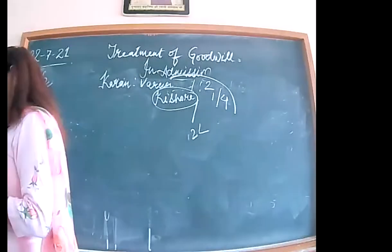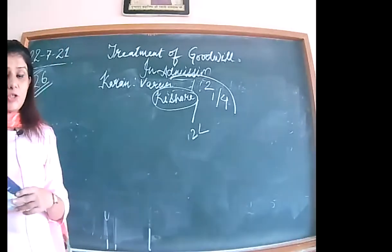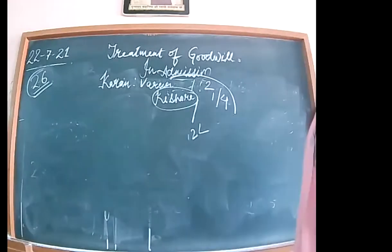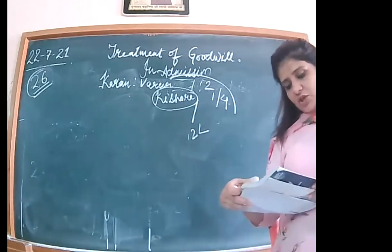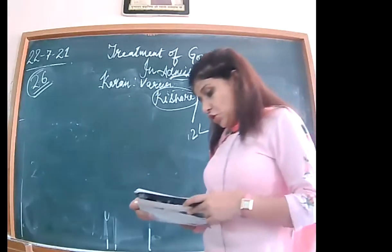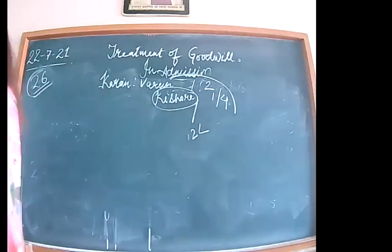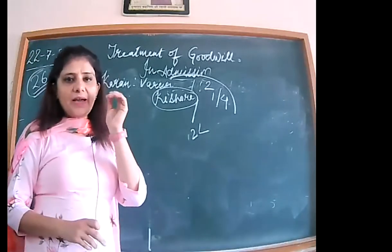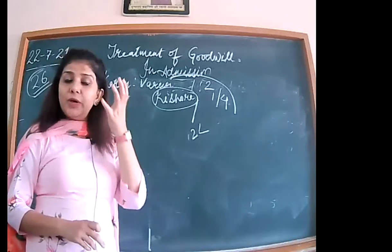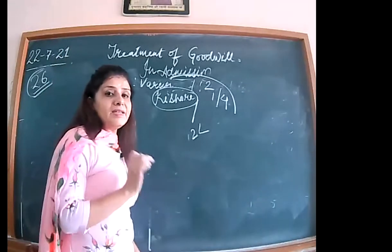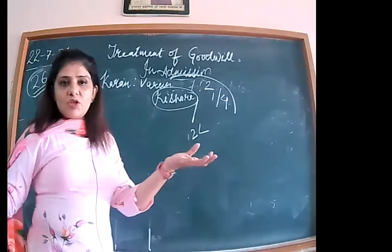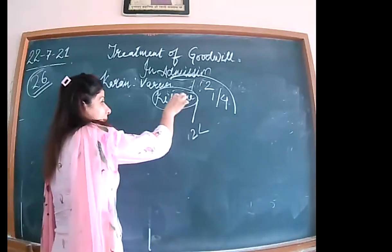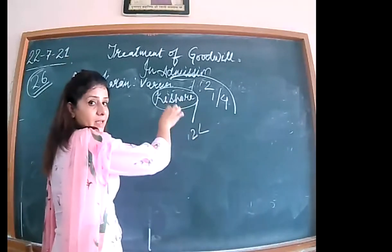The question asks: calculate the goodwill of the firm on Kishore's admission, calculate the new profit sharing ratio of Karan, Varun and Kishore, and pass the journal entry for the treatment of goodwill on Kishore's admission — considering that Kishore did not bring his share of goodwill premium. This involves hidden goodwill calculation using the incoming partner's capital.